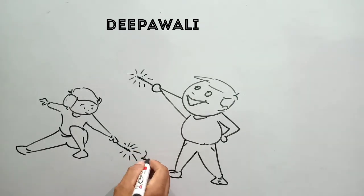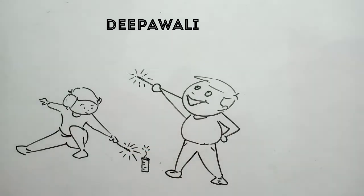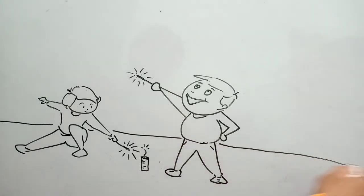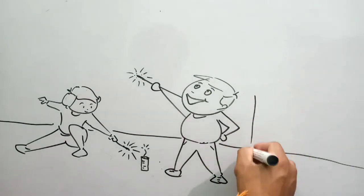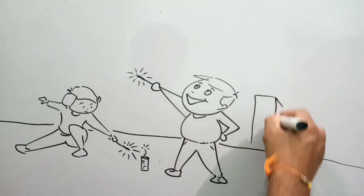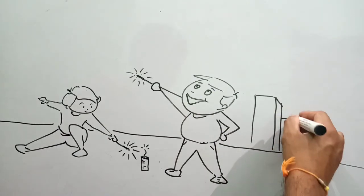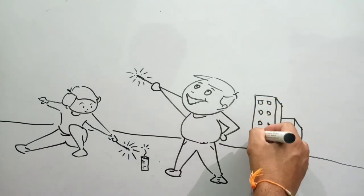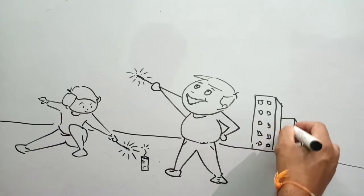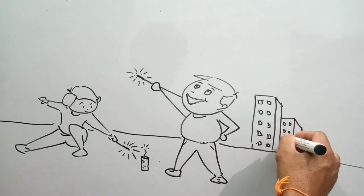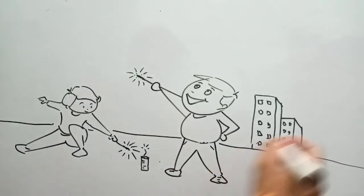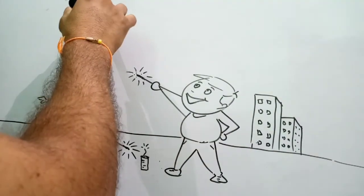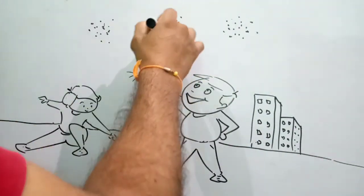Here I am drawing some crackers. Now I am drawing a horizontal line, and here I am drawing some buildings in the background. You can draw some more buildings. Now, in the sky, I am drawing some fire crackers.